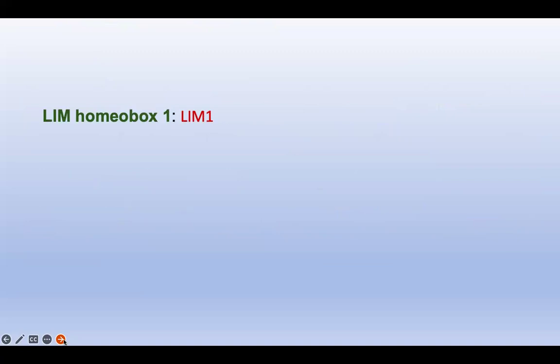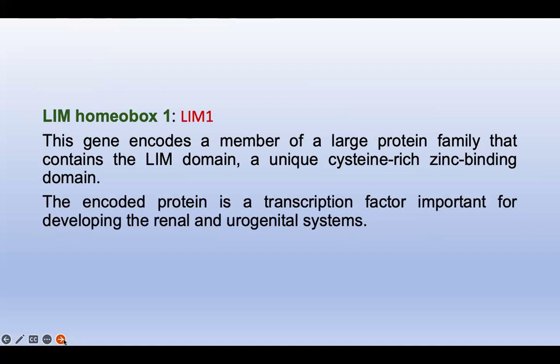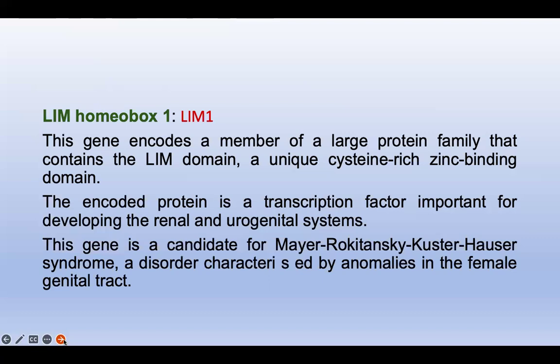The next gene is LIM homeobox 1, also called LIM1. This gene encodes a member of a large protein family containing the LIM domain — a unique cysteine-rich zinc-binding domain. The encoded protein is a transcription factor important for developing the renal and urogenital system, including the kidneys and entire urinary and reproductive tract. LIM1 is a candidate gene for Mayer-Rokitansky-Küster-Hauser syndrome.